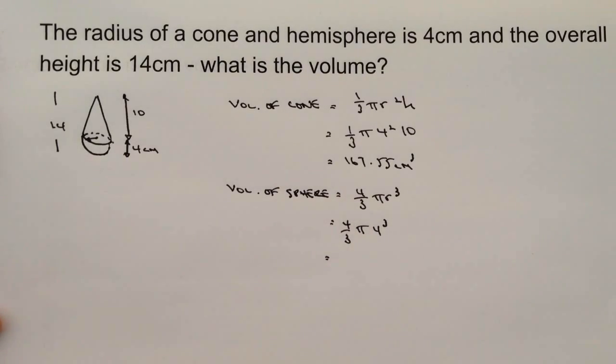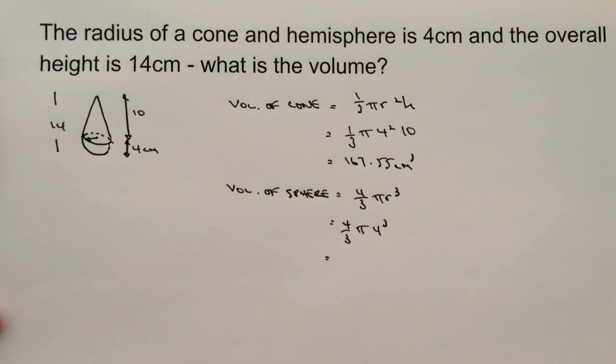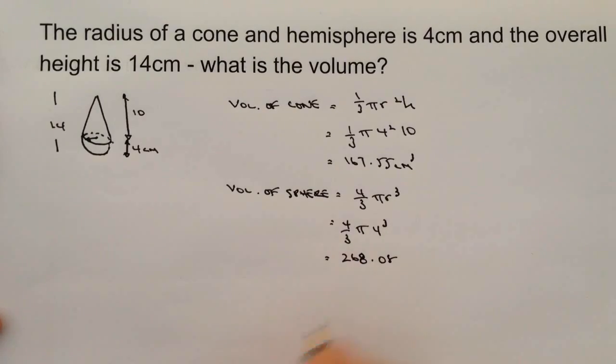So it means then that if this was an overall sphere, in other words a ball, then it would be an overall volume of 268.08. However it's not, it's only half of it, so we're just going to half it and that's going to give me the volume of the hemisphere of 134.04 centimeters cubed.